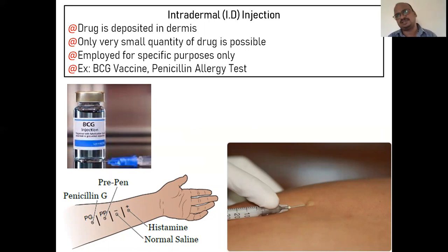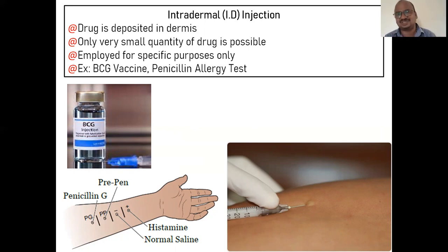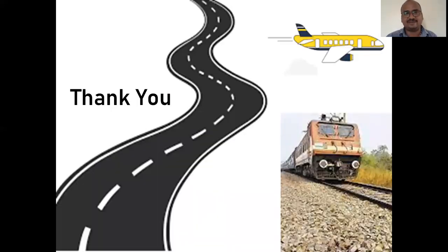Intradermal injection — the drug is deposited only in the dermis. It is different from subcutaneous, which is below the dermis. Only very small quantities can be injected. Examples include BCG vaccine reaction and penicillin allergy test — for example, penicillin G or procaine penicillin. These are given only for special diagnostic or testing purposes. That concludes the session on routes of drug administration. Thanks to the student who gave me the idea for this topic.